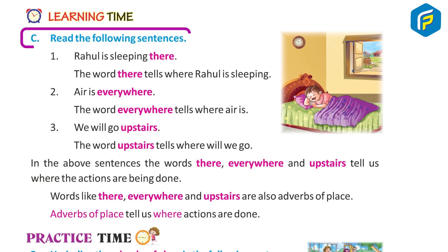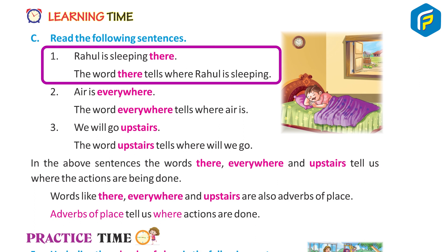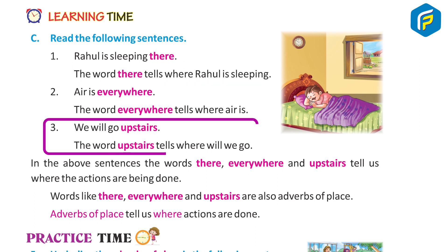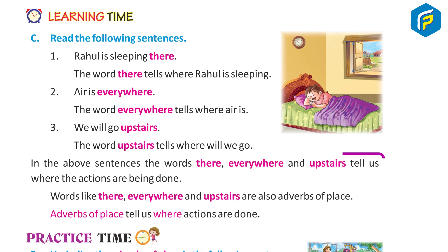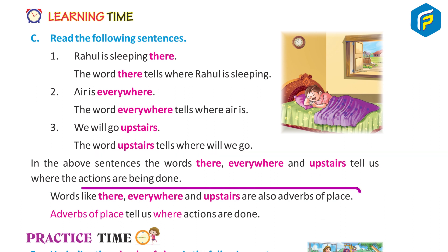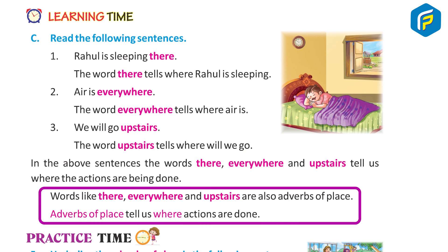Learning Time C. Read the following sentences. 1. Rahul is sleeping there — the word there tells where Rahul is sleeping. 2. Air is everywhere — the word everywhere tells where air is. 3. We will go upstairs — the word upstairs tells where we will go. In the above sentences, the words there, everywhere and upstairs tell us where the actions are being done. Words like there, everywhere and upstairs are adverbs of place. Adverbs of place tell us where actions are done.